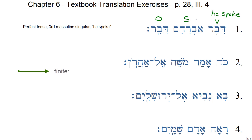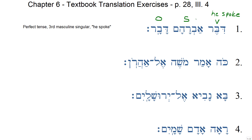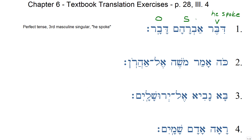Note that for verbs that we call finite verbs, including perfects and imperfects, a pronoun subject is built into the verb. For a third masculine singular finite verb such as a perfect, the pronoun that is built in is 'he.' For a finite first person singular verb, the built-in pronoun is 'I,' and for first person plural, it is 'we,' etc. For third person verbs, we can also have an explicit subject — in this sentence, it is Abraham. When we do have an explicit subject, it replaces the built-in subject. Thus we do not say 'Abraham he spoke,' we say 'Abraham spoke.'